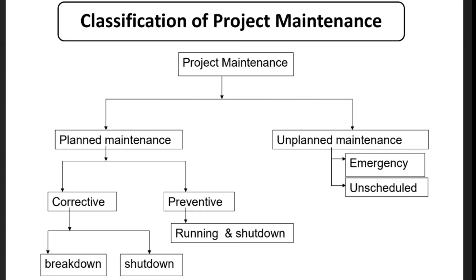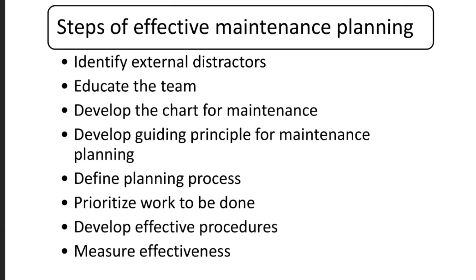Now, the steps of effective maintenance planning — for example, timely maintenance should be done so that operations are utilized properly. The first step is to identify external distractors or factors that affect the system, machine, or equipment. Then, a team should be assembled to prepare repair and maintenance plans and carry out the work on time.